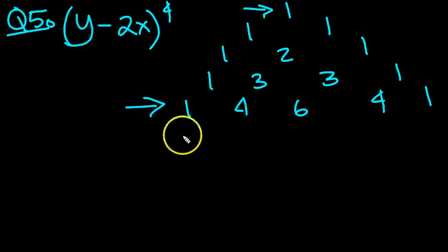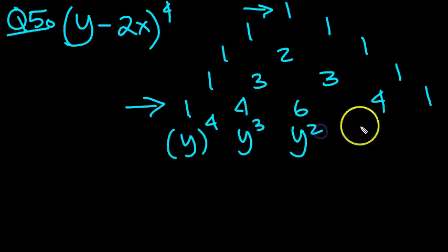Here the first term is y, so descend the powers of y to the 4. We don't need brackets. y cubed, y squared, and y to the 1, because it's just a single term.